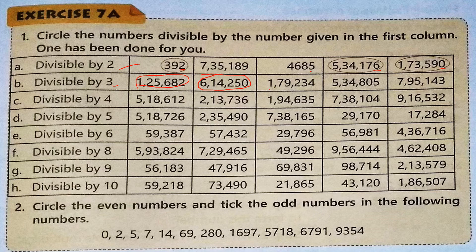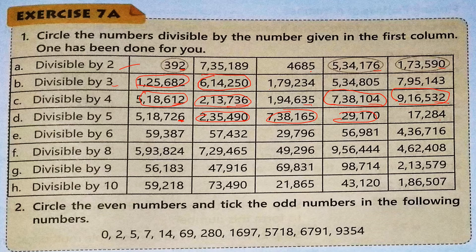For divisibility by 4, we check the last two digits. If the last two digits form a number divisible by 4, we circle it. For example, 12 is divisible by 4, so we circle that number. 35 is not divisible by 4, so we don't circle it. 04 and 32 are divisible by 4, so we circle those. For divisibility by 5, if the last digit is 0 or 5, we circle it.